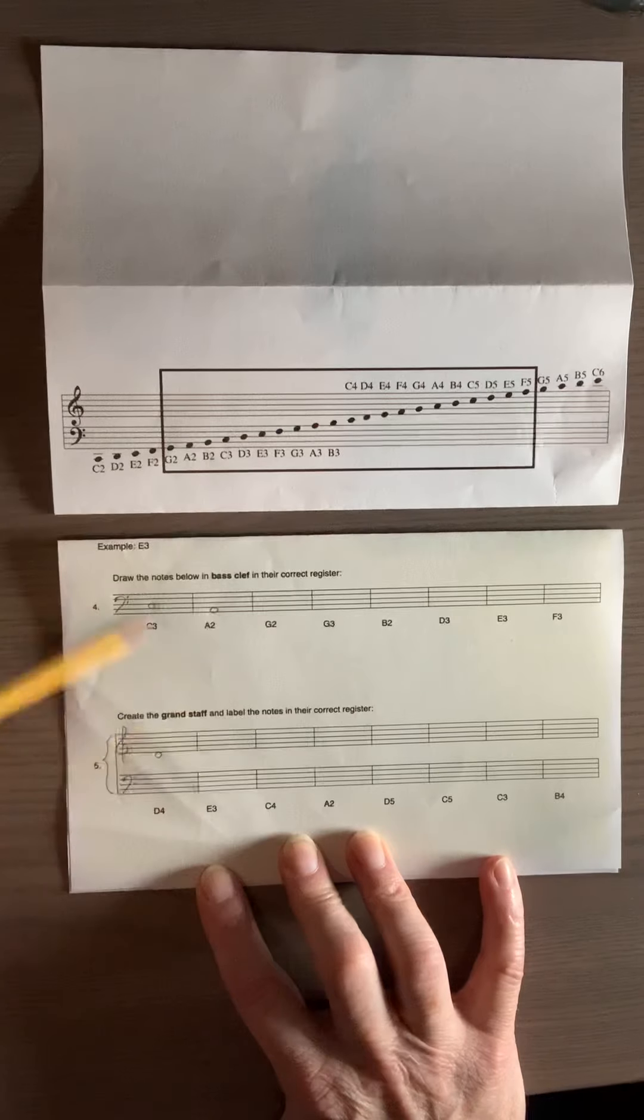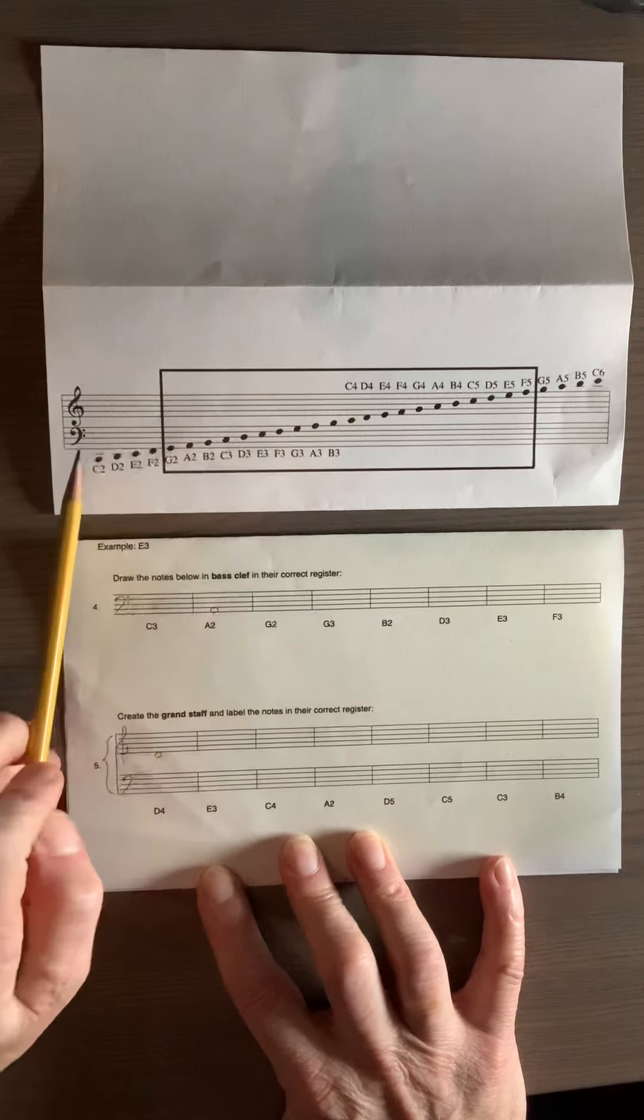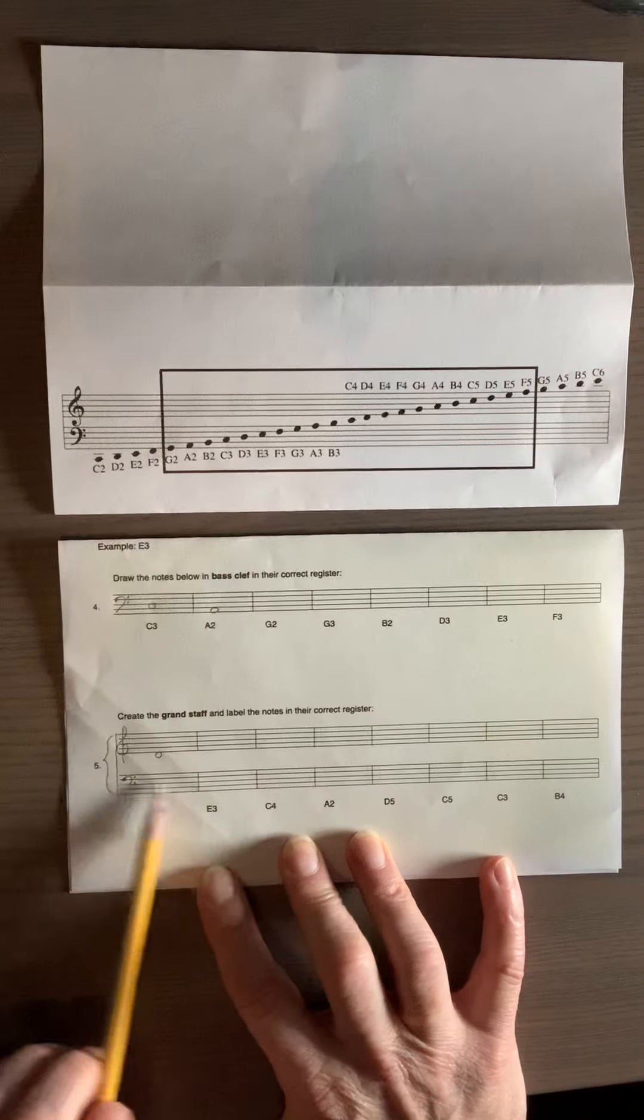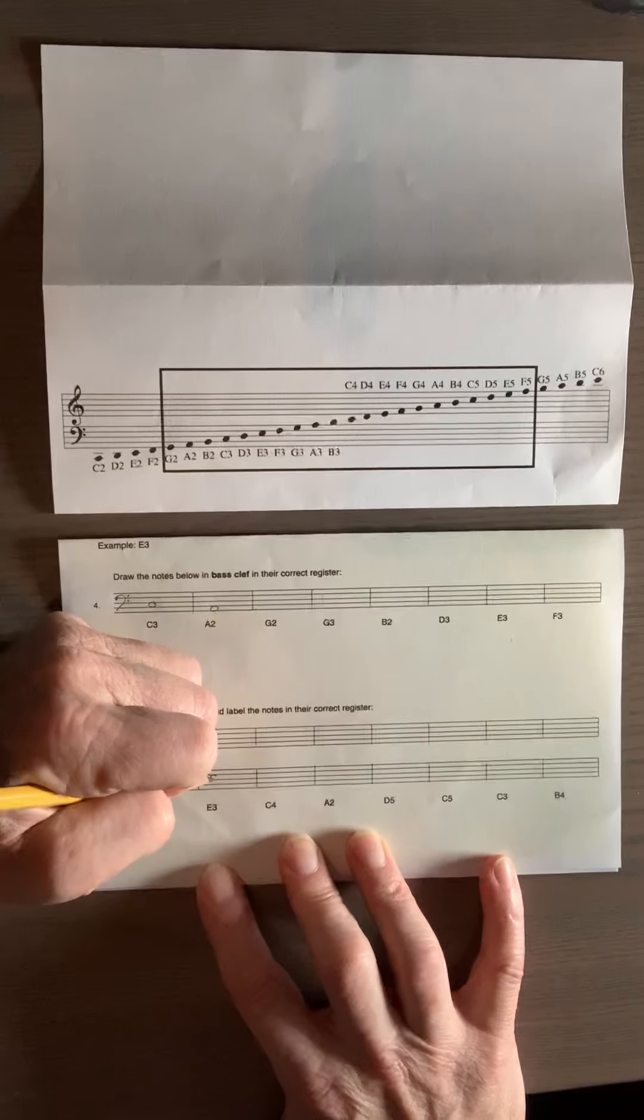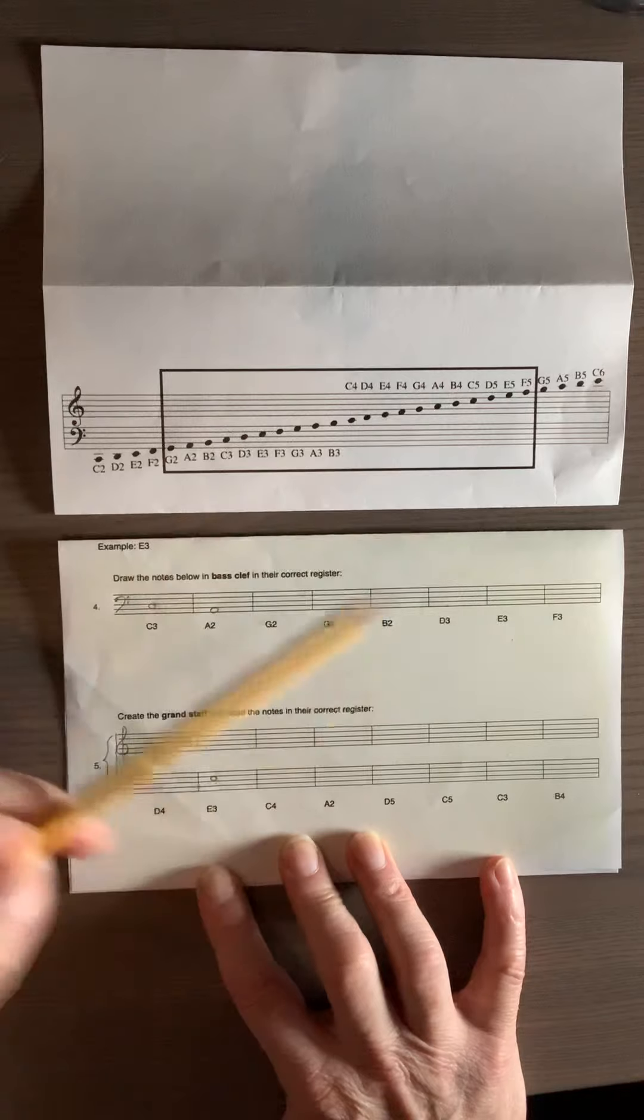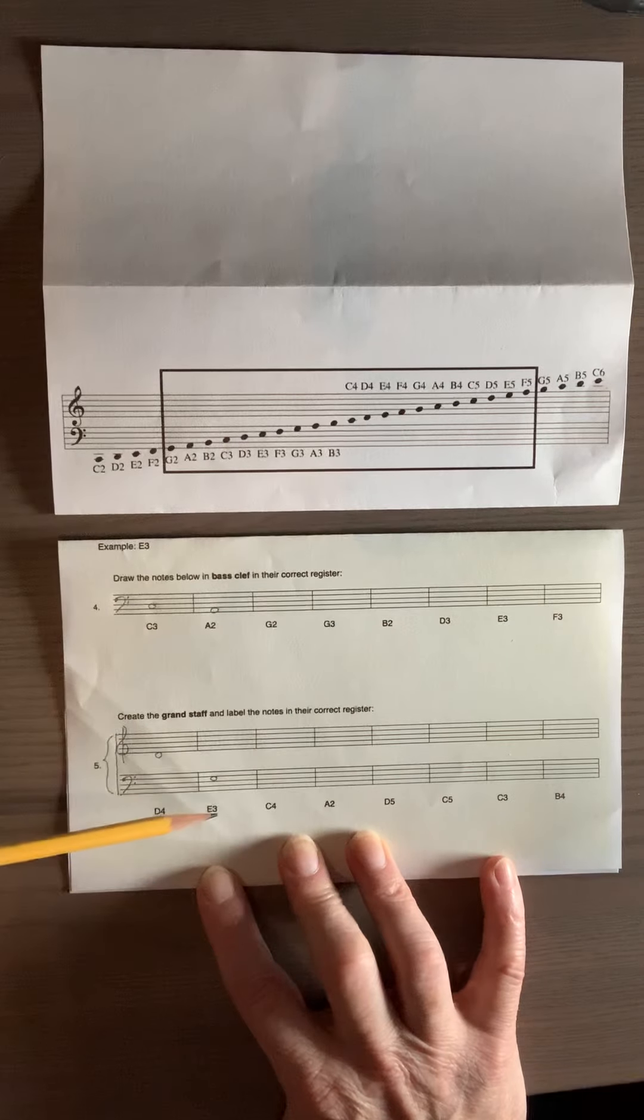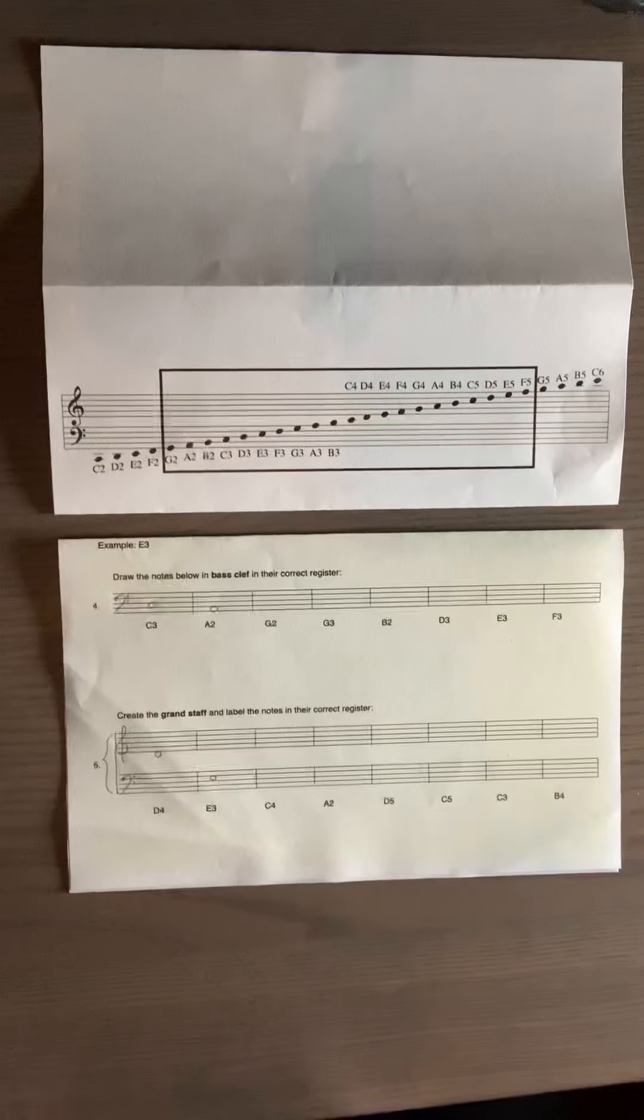Then it says E3. Okay, so I just saw it right here. Here's E3. So that's bass clef. And it's in the third space. So that's all you're doing, just getting familiar with where these notes lie in their register number on the grand staff, whether it's in bass clef or in treble clef. All right, I hope that's helpful.